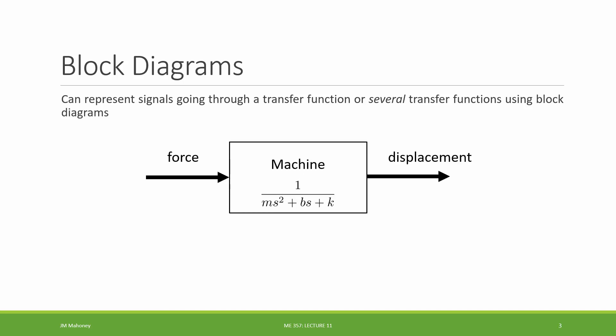For example, if we have a mechanical system — some sort of machine — it's going to take some input signal, a force, and give some output signal, a displacement. A signal is something that flows in our system. It could be a force, a displacement, or in electrical systems, a current or a voltage — something that can be an input or an output, a time-dependent variable in our system.